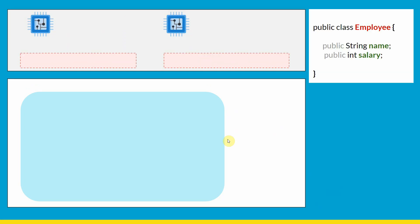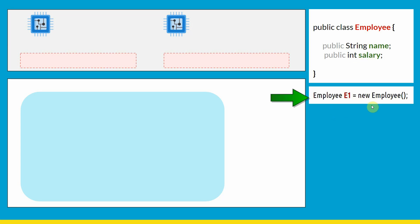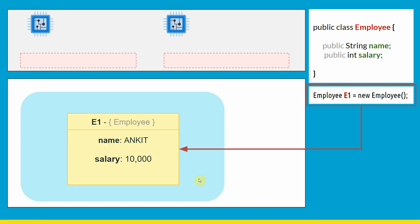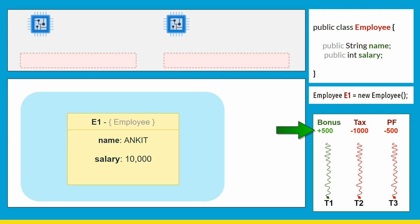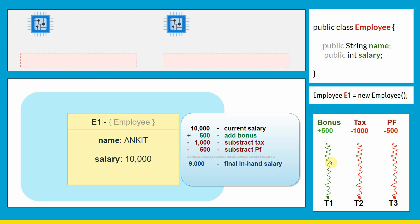For simplicity, let's consider only two cores, each with its own cache. We have an Employee class which has only the name and salary of an employee. When we create a new Employee object, it is created inside heap memory allocated by JVM in the RAM. We have three operations: first, the employee gets a bonus of 500 rupees; second, tax is deducted; and third, provident fund (PF) is also debited from the salary.